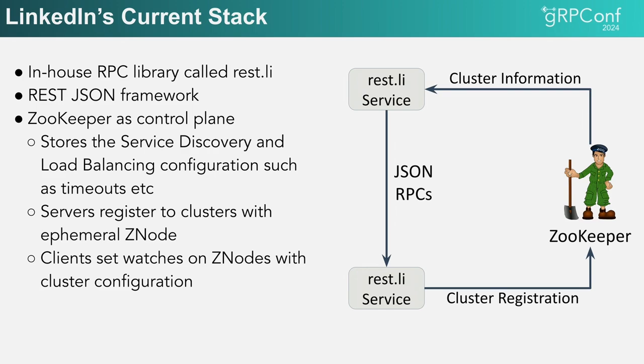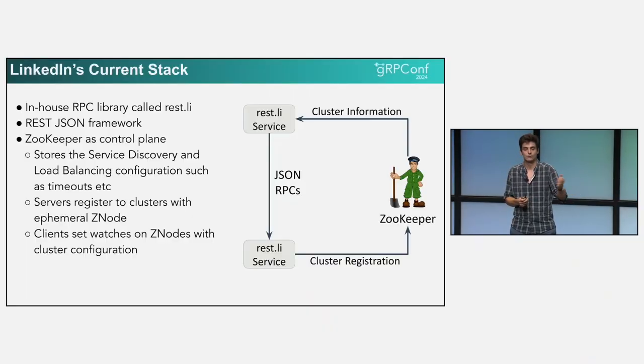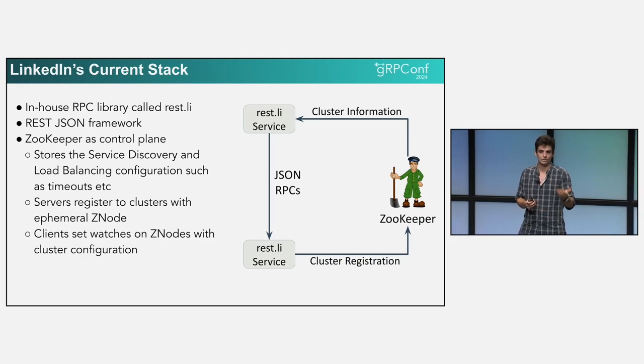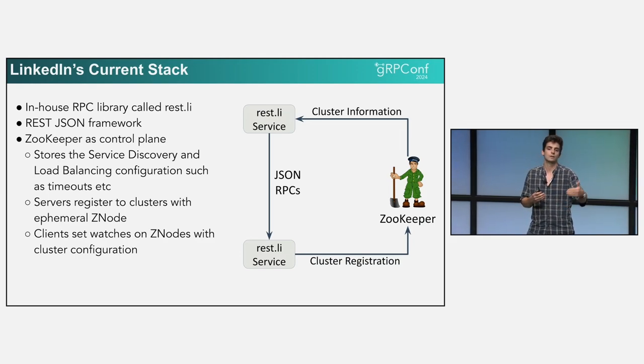ZooKeeper stores all of the service discovery configurations, such as routes, load balancing parameters, timeouts, etc. Each server registers itself to ZooKeeper by adding an ephemeral Z-node in the corresponding cluster, and then clients set watches on those clusters and get notified whenever the cluster changes. When they're trying to send requests to a specific service, they look up the cluster that service belongs to and get a host list directly from ZooKeeper.